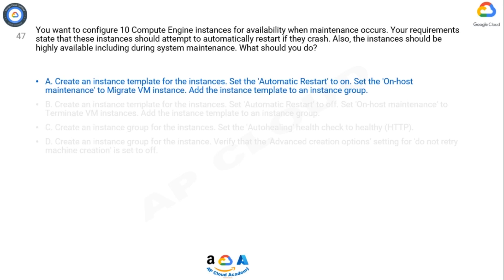In the Maintenance Policy section, select the Automatic Restart option. This will cause the instances to automatically restart if they crash. In the Availability Policy section, select the Migrate option. This will cause the instances to be migrated to another host during system maintenance, ensuring that they remain available. Save the changes to the instance settings.